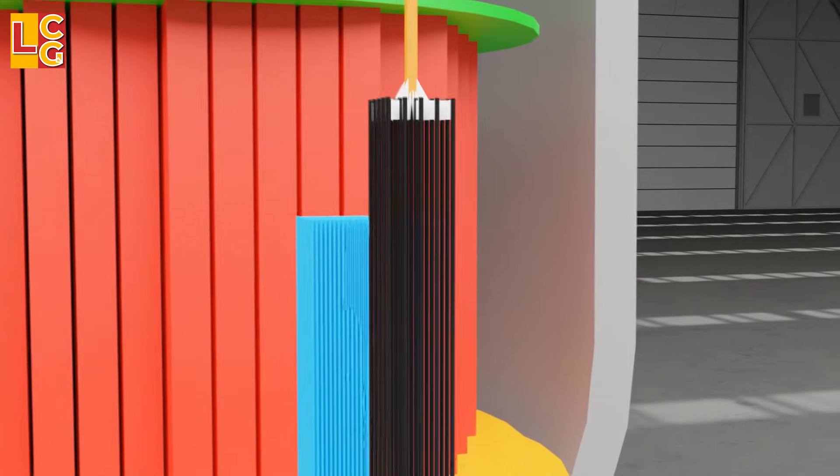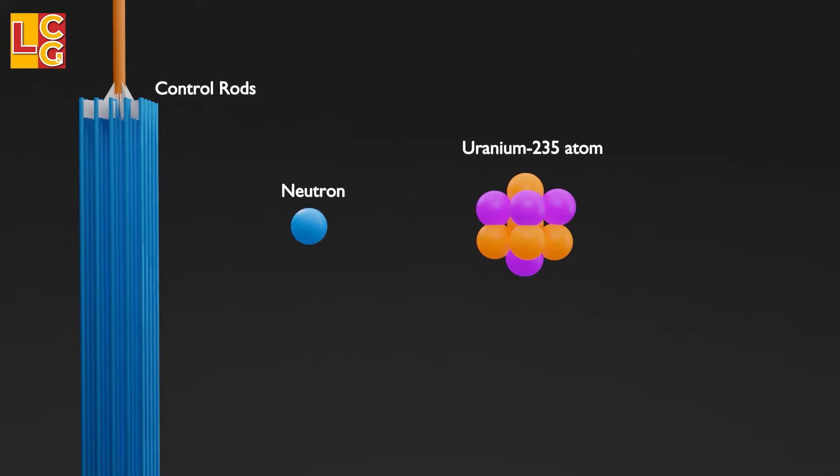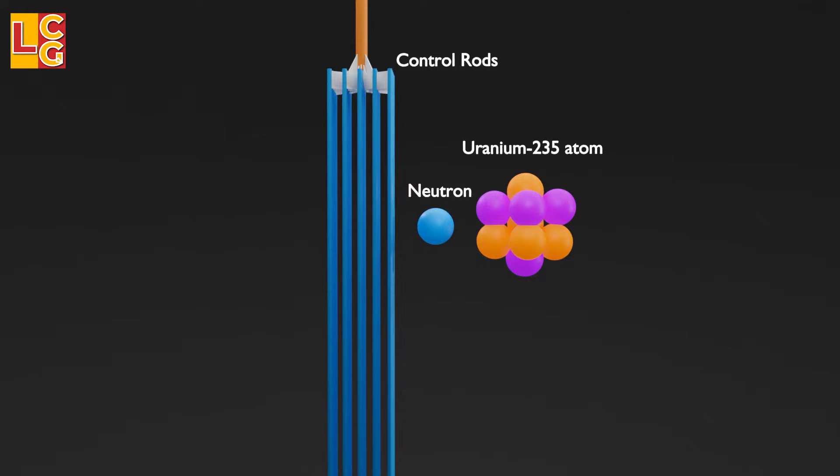Aside from that, the vessel also has these control rods, which usually have a percentage of boron or cadmium, which absorb neutrons to prevent them from reaching the uranium atoms, therefore controlling the intensity of the fission chain reaction.